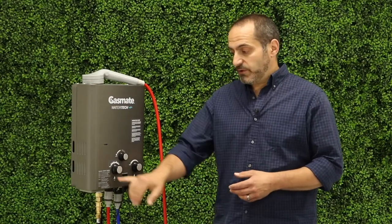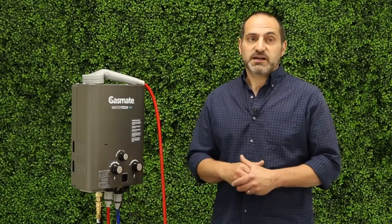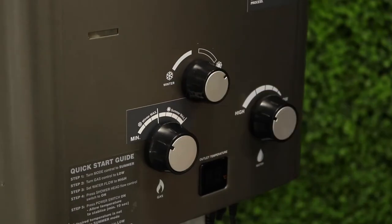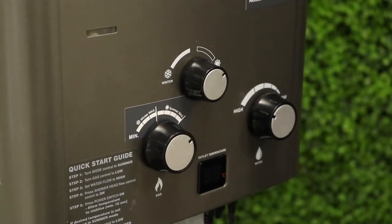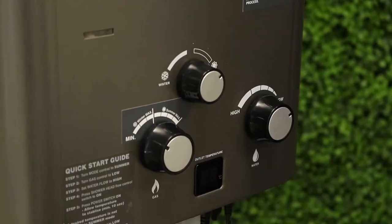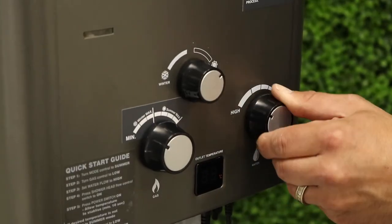So to start your hot water system simply do the following as outlined on the quick start guide on the unit. Turn the center knob to summer setting. Turn the gas control knob to minimum. Set the water flow knob to high.